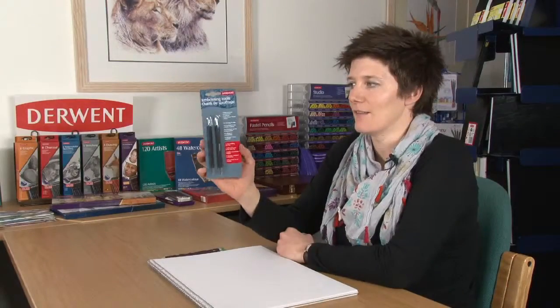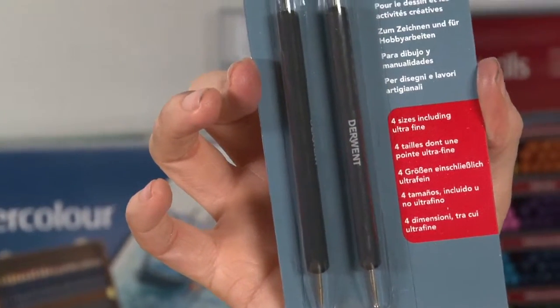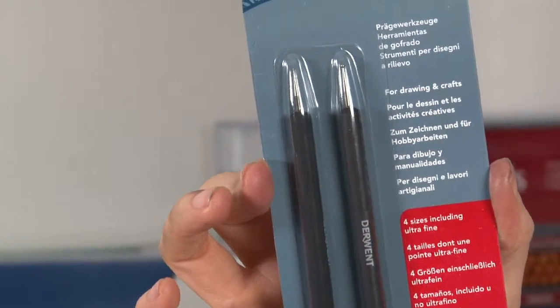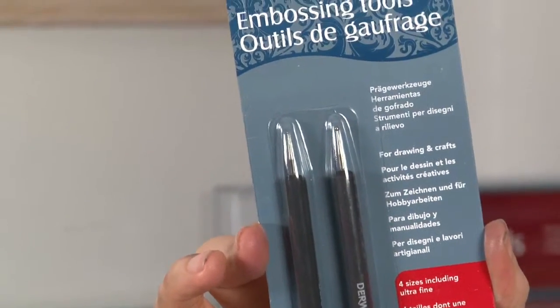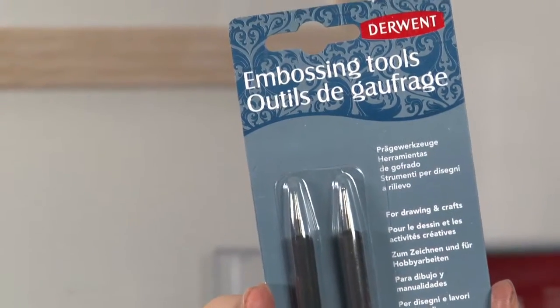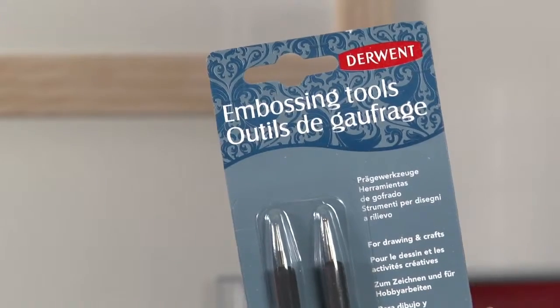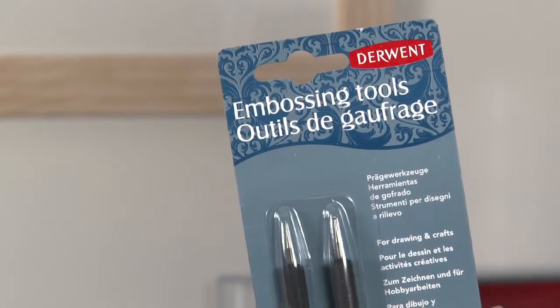Let's have a look at the Derwent embossing tools. There's two double-ended tools in the pack which means you get four different sized heads. The smallest one is the ultra-fine which is at 0.7 millimeters and we've got varying degrees all the way up to 2.3 millimeters in size.